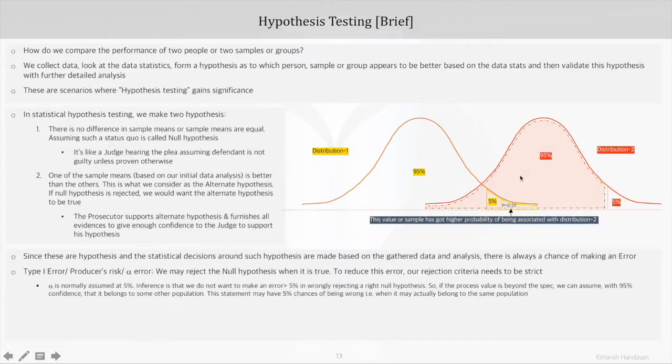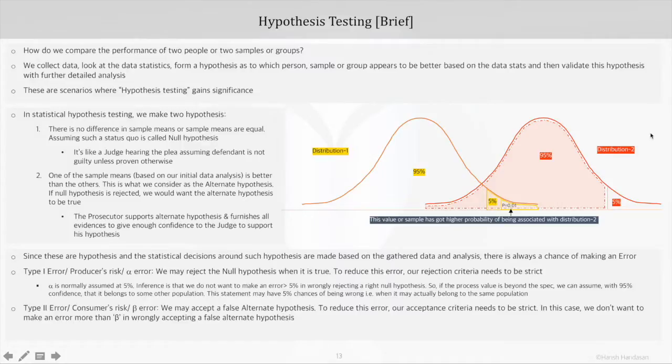This event may have a higher, that is 95%, chance of belonging to some other population, let's say distribution two. Now this distribution two in real life scenario represents the other sample being compared or other design option being considered. So if we would have assumed that this event belonged to distribution one, then we would have committed an error.